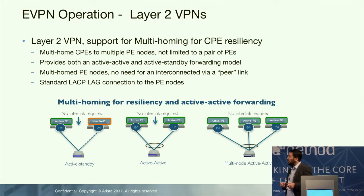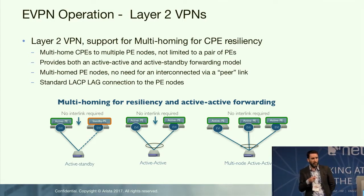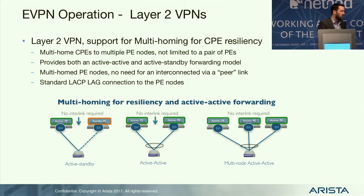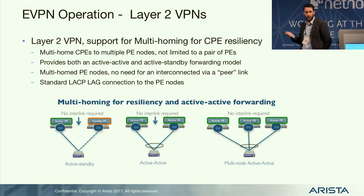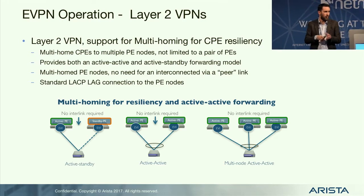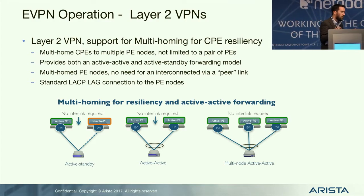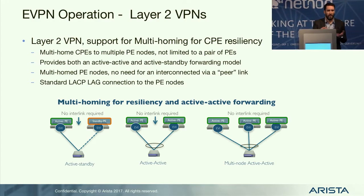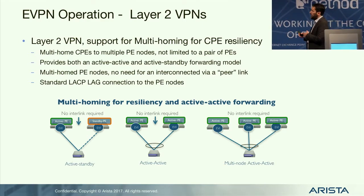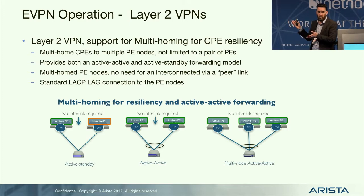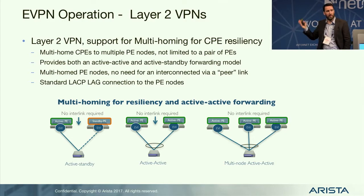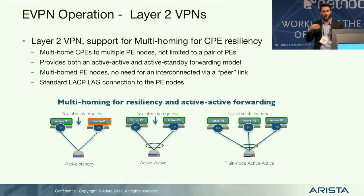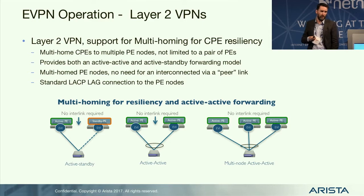The multi-homing feature is different from MC-LAG or VPC technology. With EVPN multi-homing, you can have two or more VTAPs — they don't need to be interconnected — working in active-standby or active-active mode. You can have three, four, or more. They automatically discover each other and the shared Ethernet segment they're both connected to via the type 1 and type 4 routes.